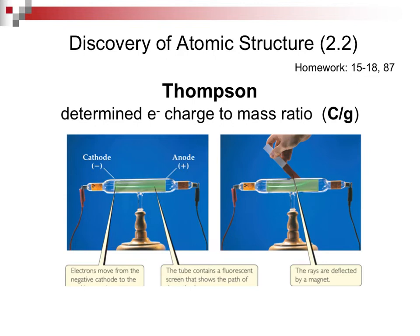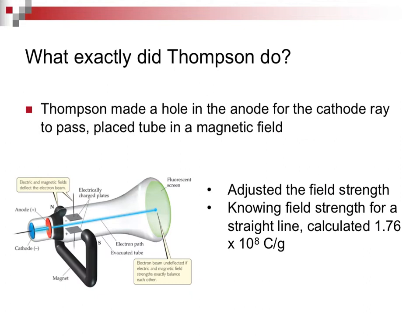Section 2.2 is the discovery of atomic structure. Thomson is the scientist who determined the electron charge-to-mass ratio. The experiment uses a cathode ray tube, which generates a cathode ray visible as a green phosphorescent glow. When you bring a magnet up to that ray, the ray deflects.